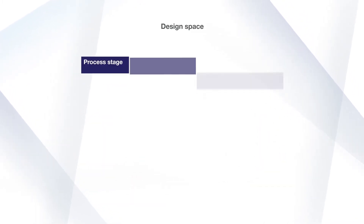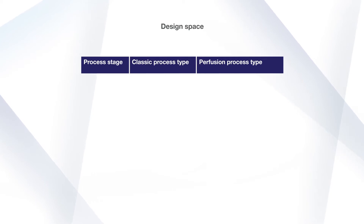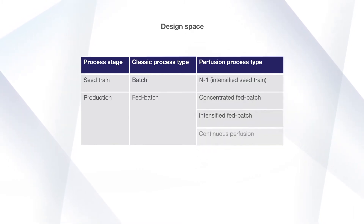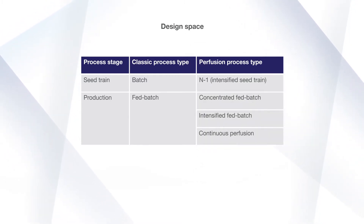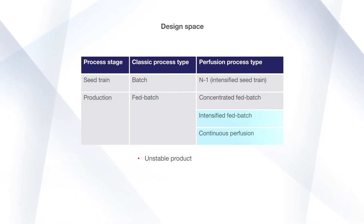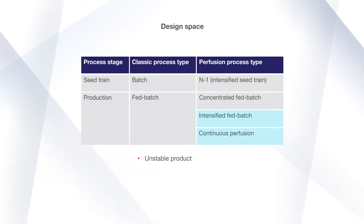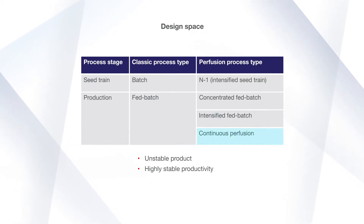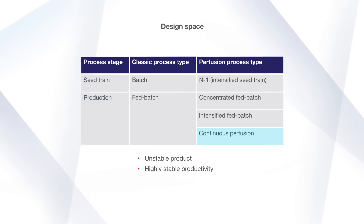To determine the process type, first establish which process is the best fit based upon known information about the cell line, product, and facility as gleaned in the knowledge space work. For example, it may be necessary to produce an unstable product, making it beneficial to continuously remove product. If the clone being used demonstrates highly stable productivity, then this scenario would be an obvious best fit for a continuous perfusion process, barring any other considerations or restrictions.